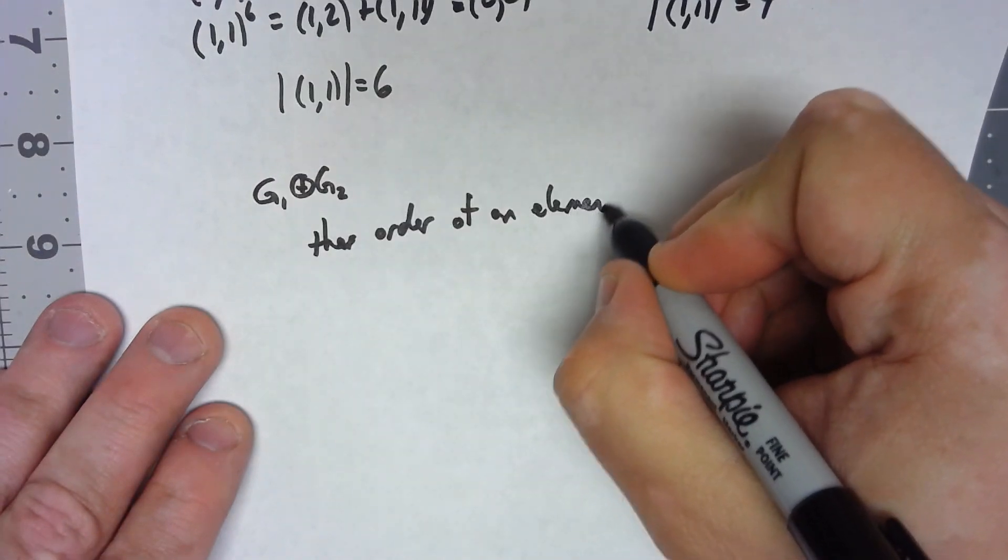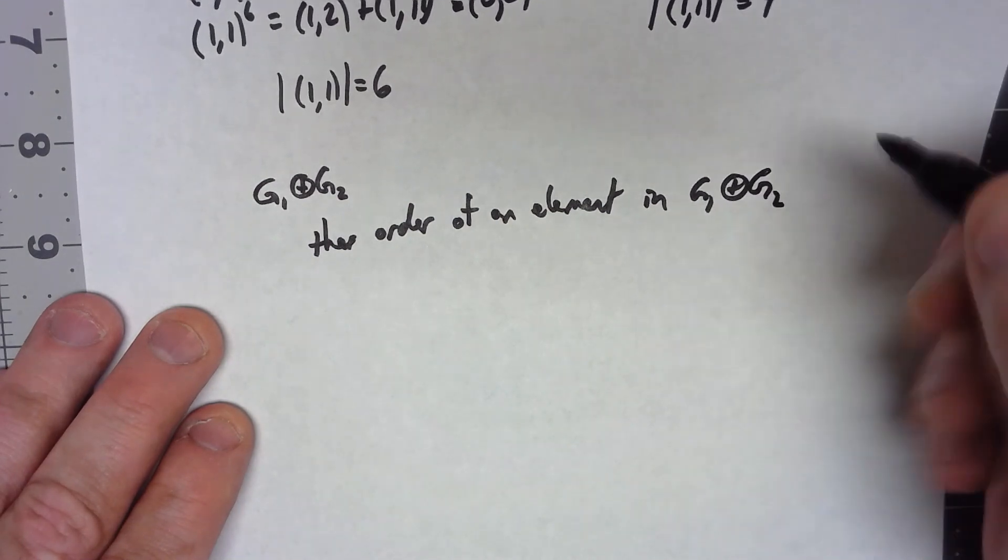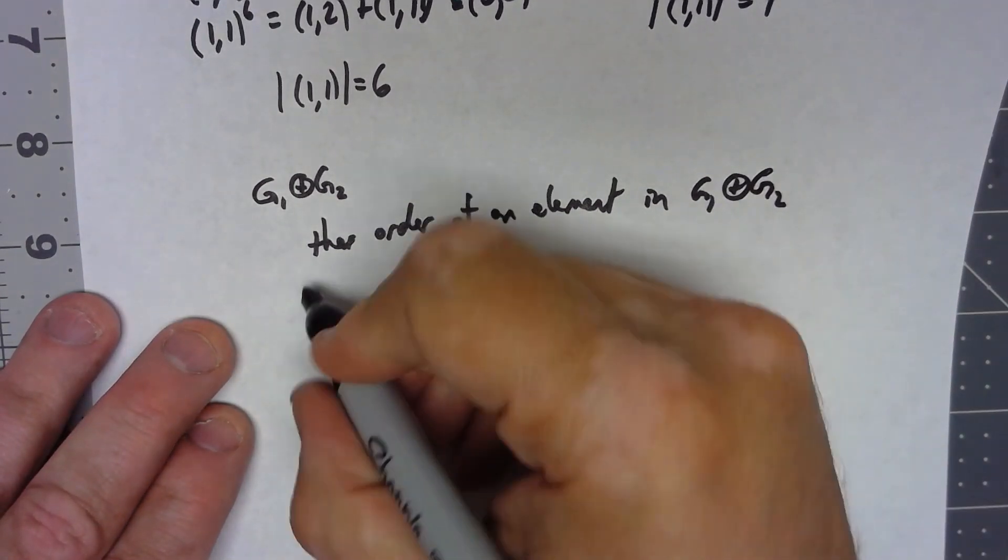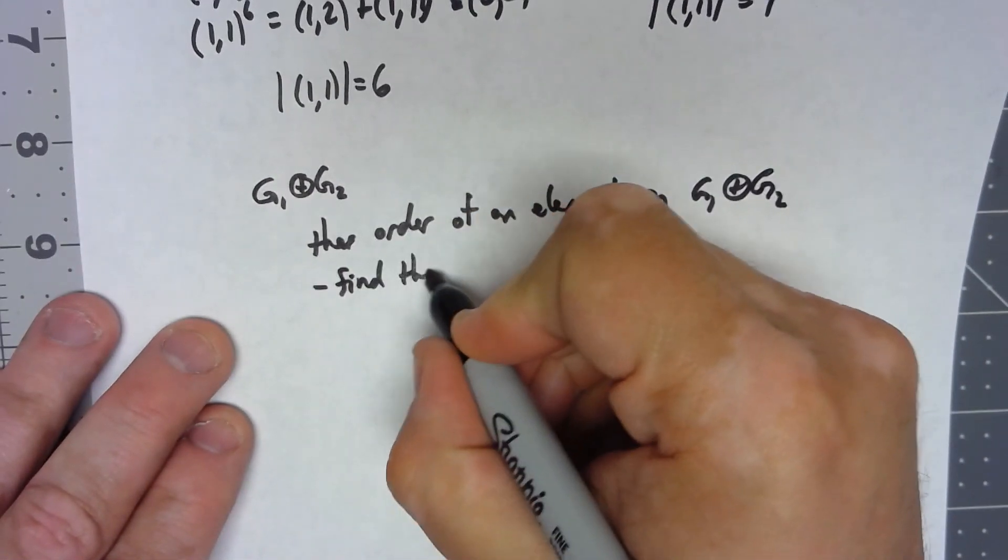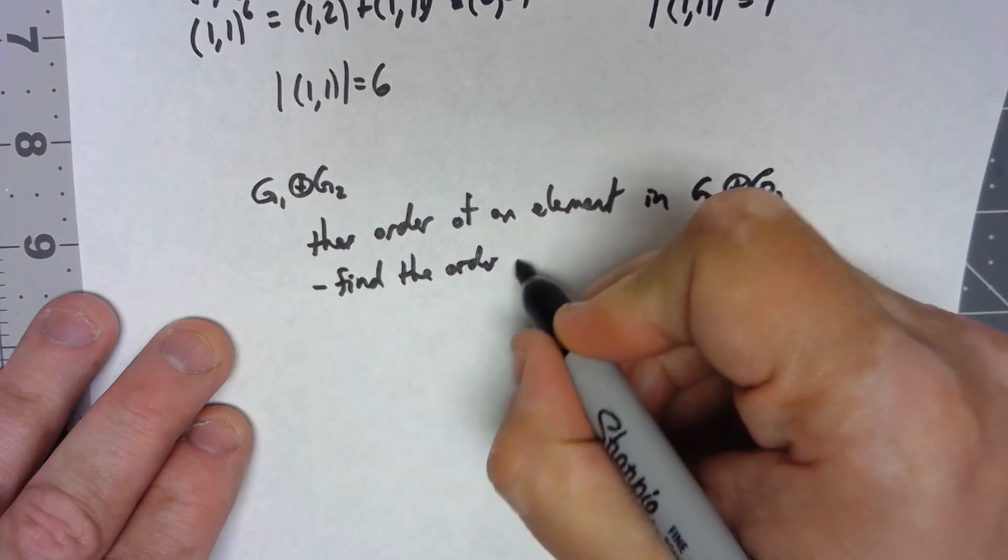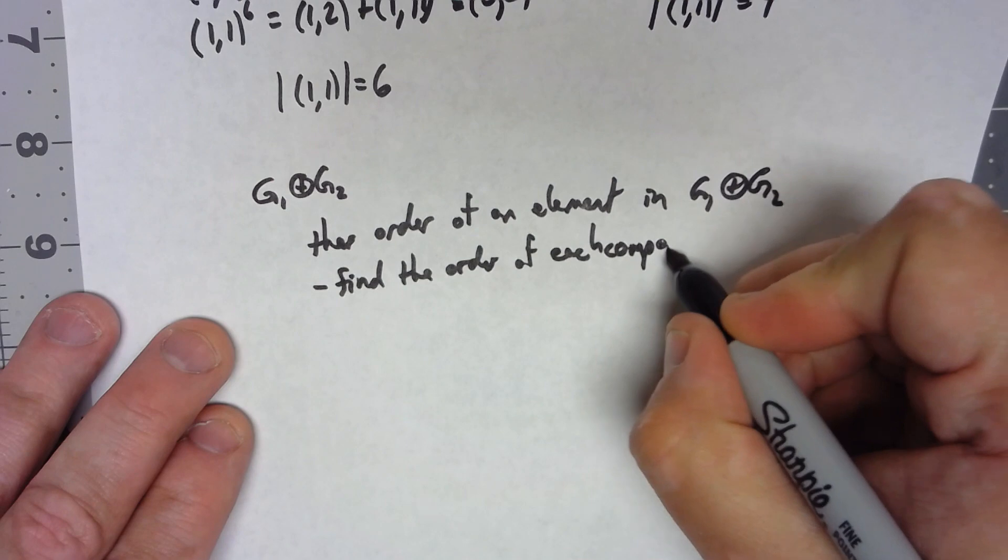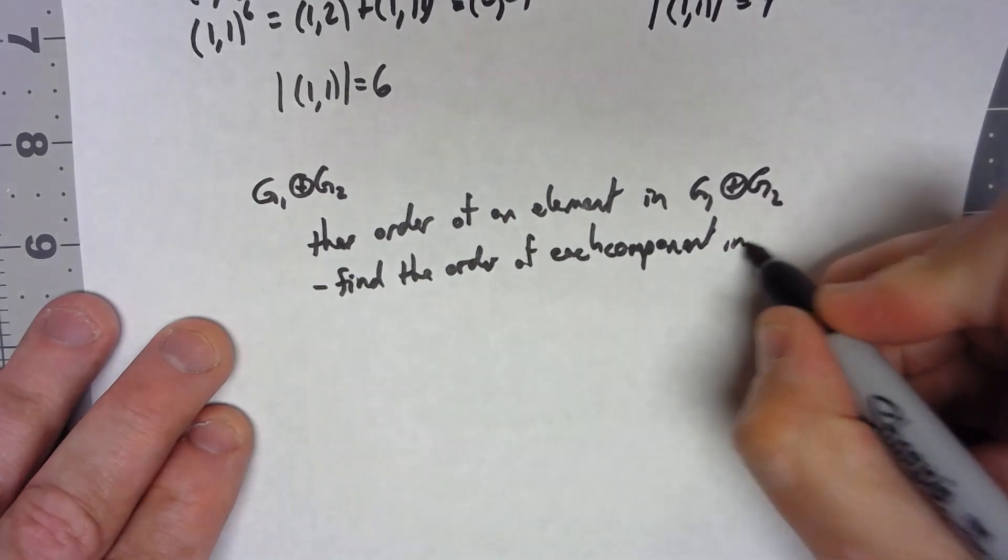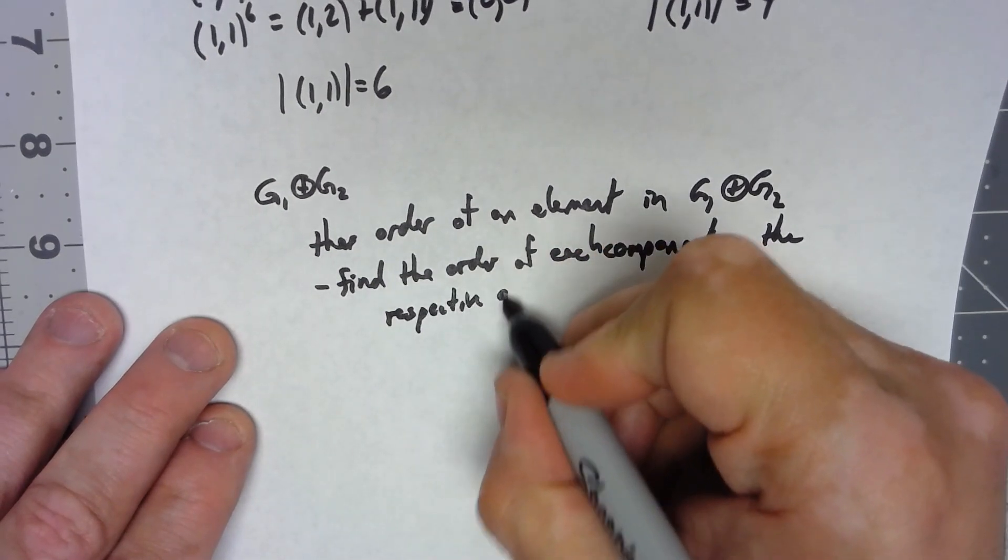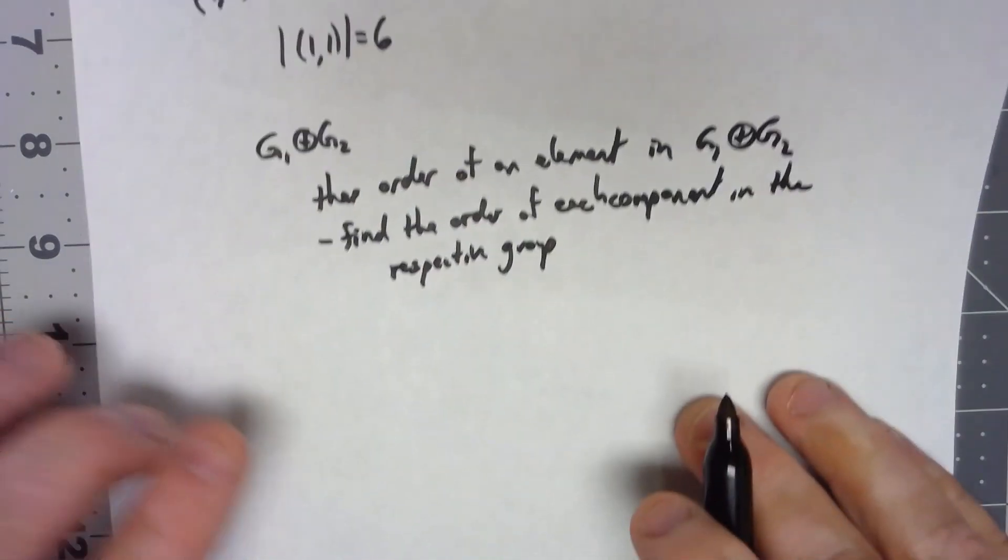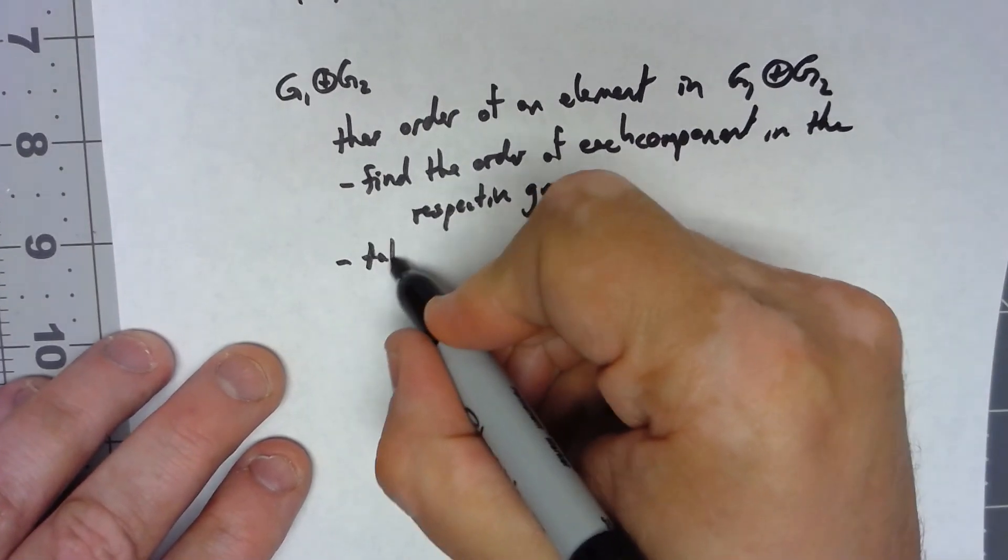All you need to do is find the order of each component in the respective group, and then take the LCM of those orders.